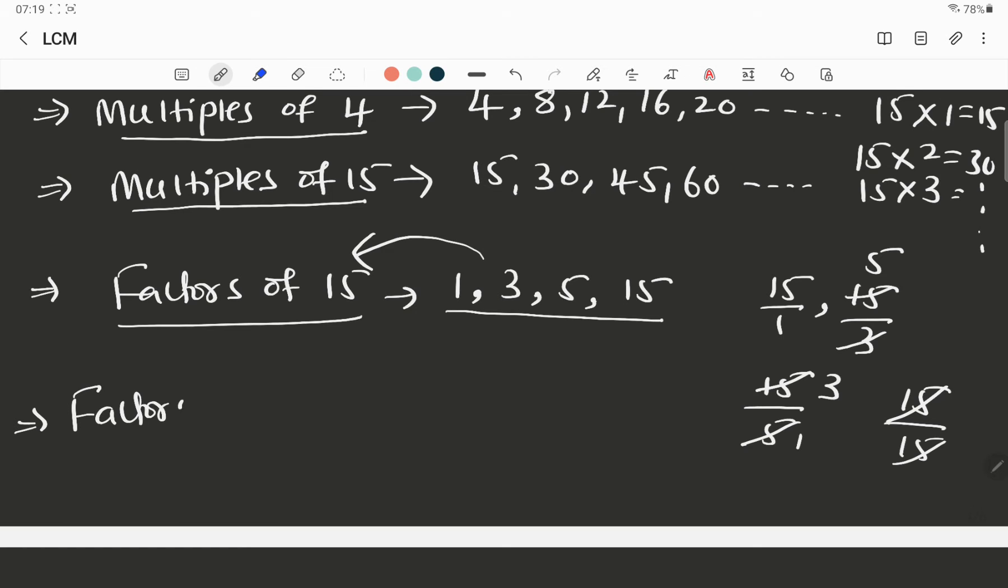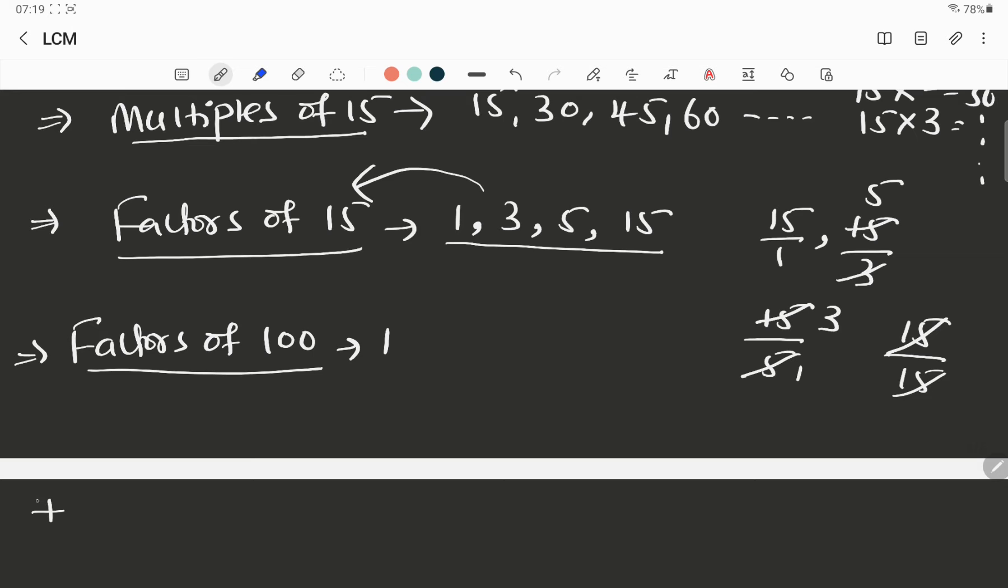Now, if I ask you, what are the factors of 100, for example? What are the factors of 100? Definitely 1. 1 is factor of every number. Please note down. What is this? 1 is factor of every number.